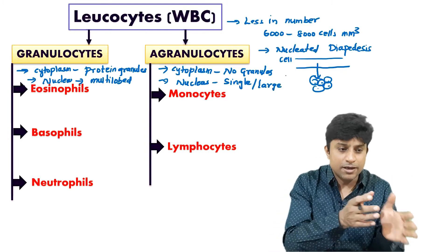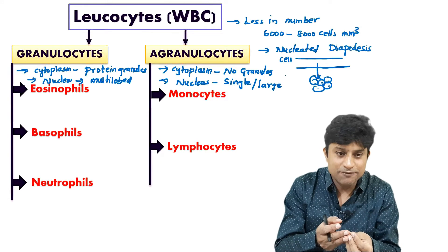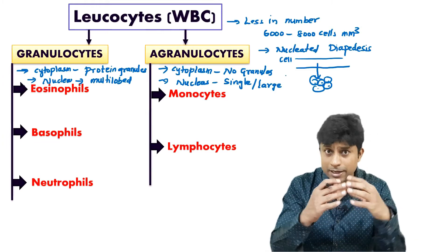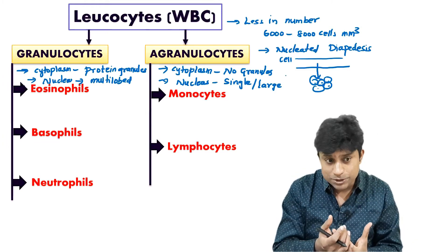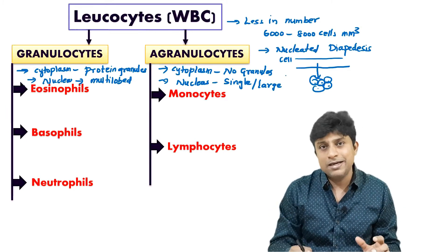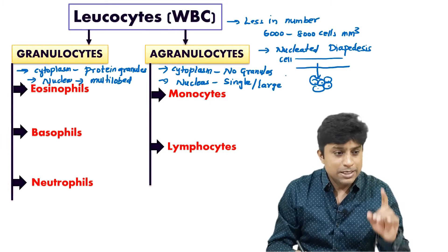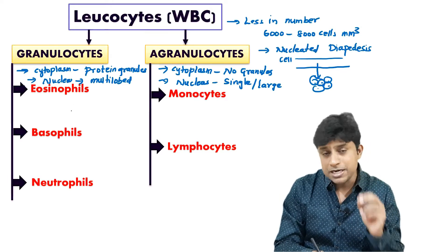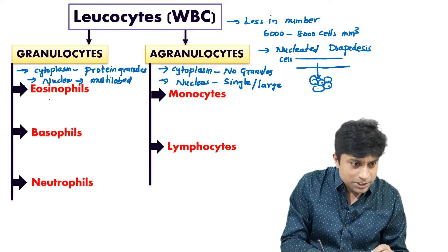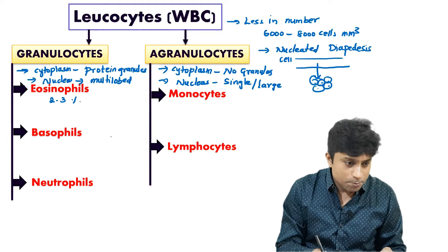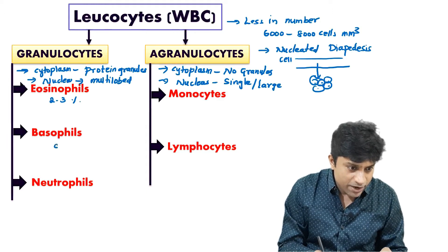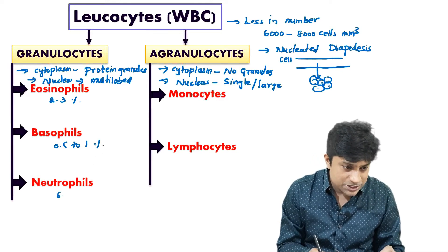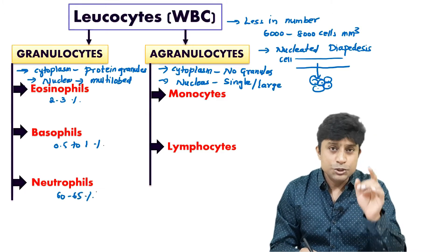Granulocytes are white blood cells with protein granules in their cytoplasm and a multi-lobed nucleus. Granulocytes are further divided into three types: eosinophils, basophils, and neutrophils. Eosinophils are just 2 to 3 percent, basophils are 0.5 to 1 percent, and neutrophils are 60 to 65 percent — the most numerous WBC.